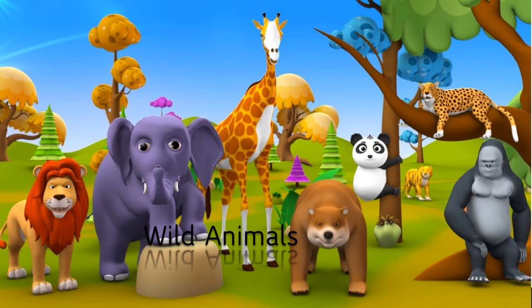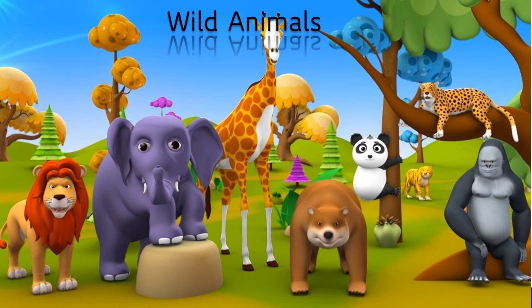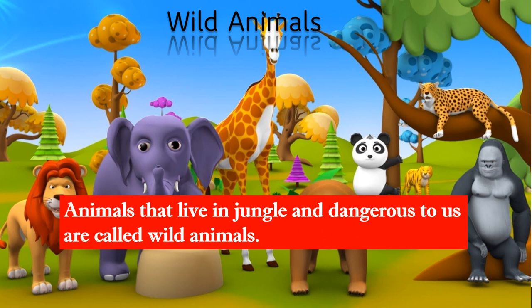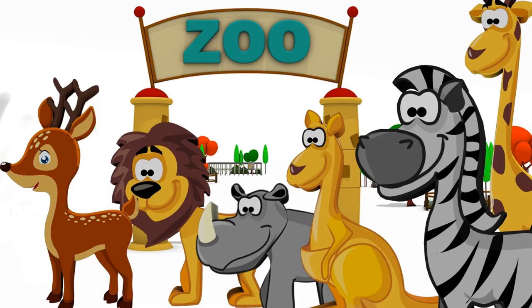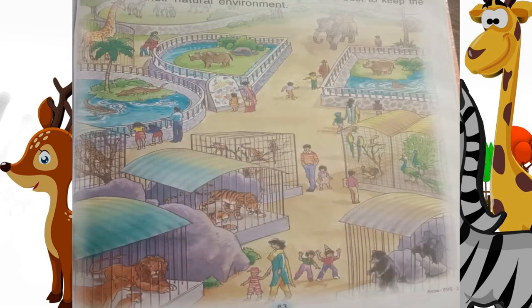Now let's talk about wild animals. Some animals live in jungles and forests. Some of them are very dangerous to us. Animals that live in the jungle and are dangerous to us are called wild animals — for example, tigers, lions, bears, snakes, gorillas, monkeys, etc. We can see wild animals in a zoo. It is very cruel to keep animals in a small cage. Zookeepers try their best to keep the animals in their natural environment.